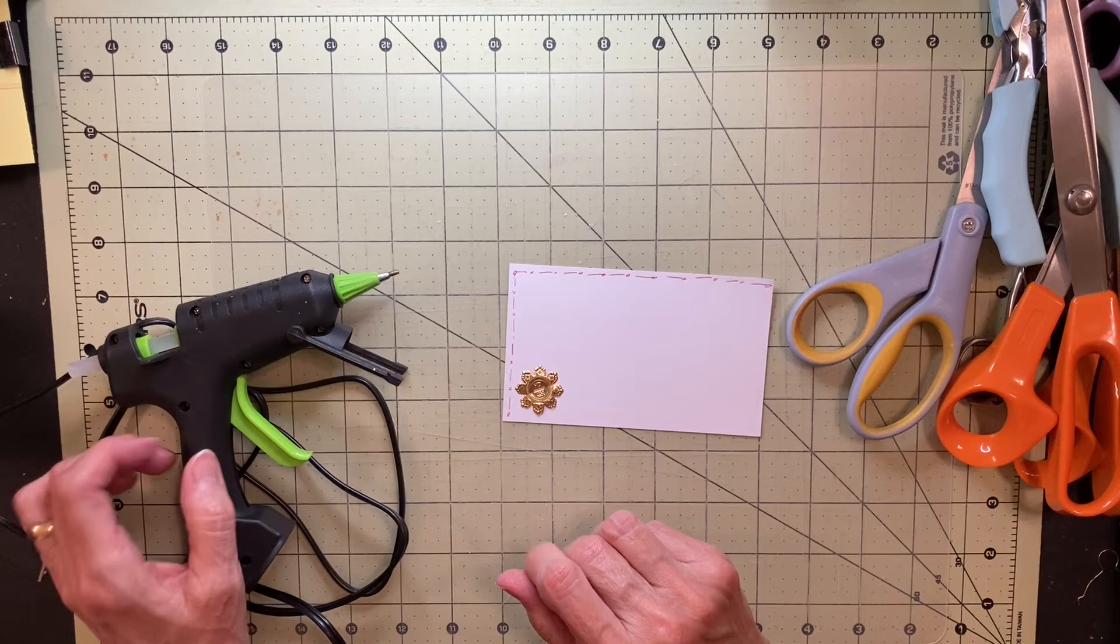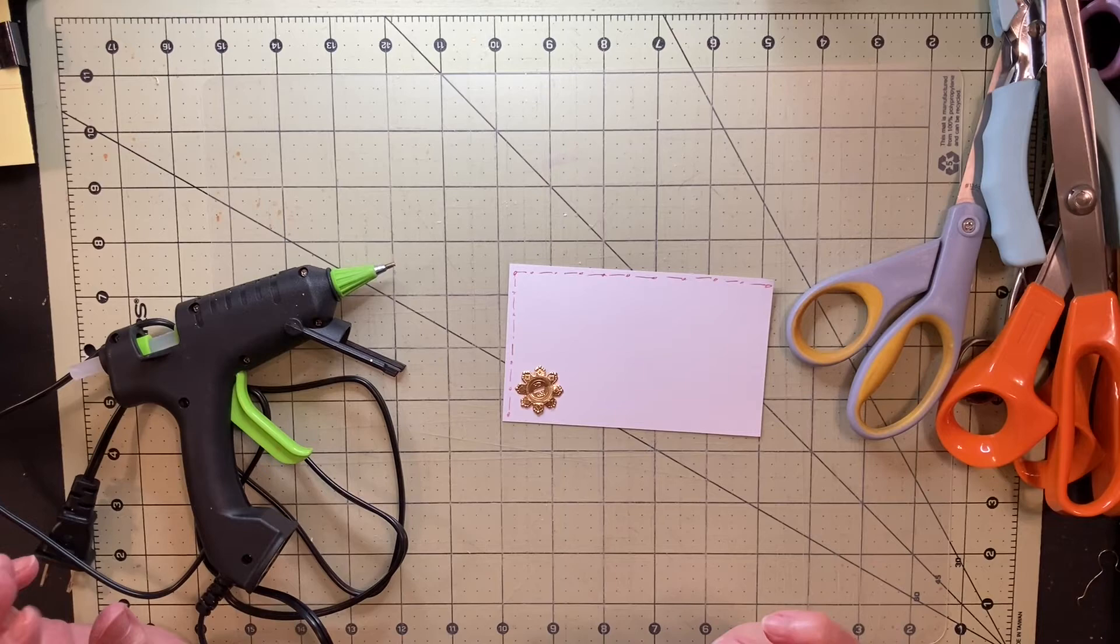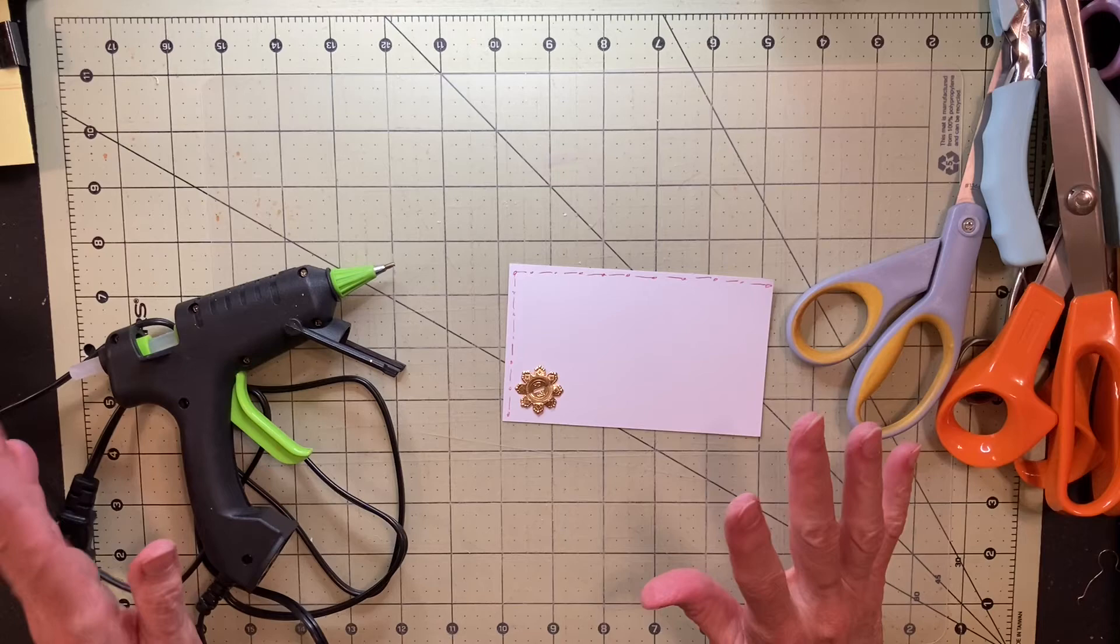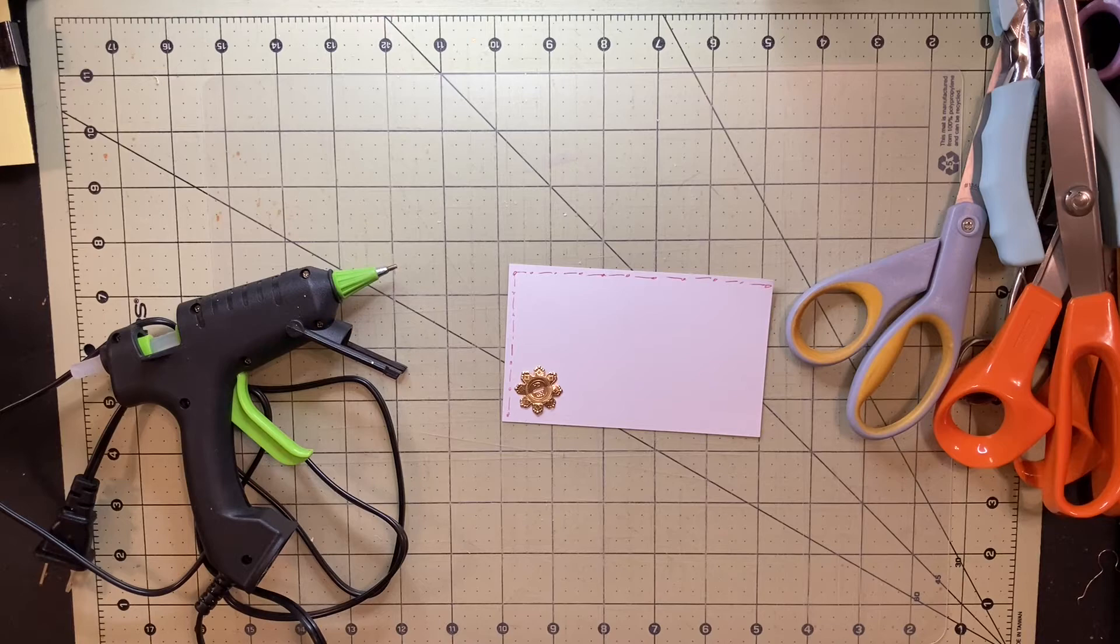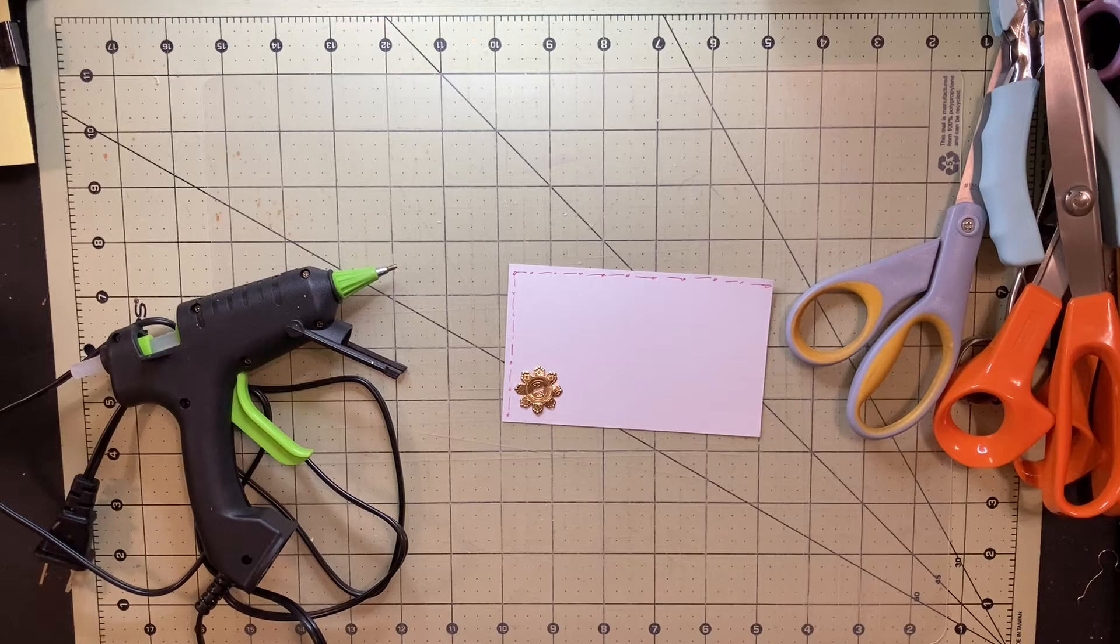There are other things like double sided tape, double sided foam tape. It raises things up off your paper and makes them have more dimension. But as you go along, if you have scissors and glue and a ruler and a pen and just some of these basic tools, you can get started in making a junk journal.